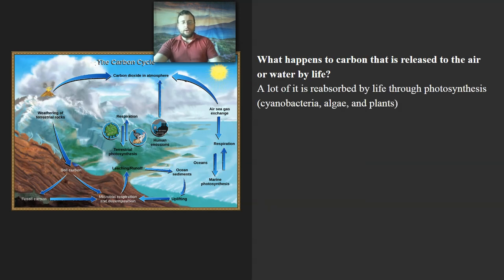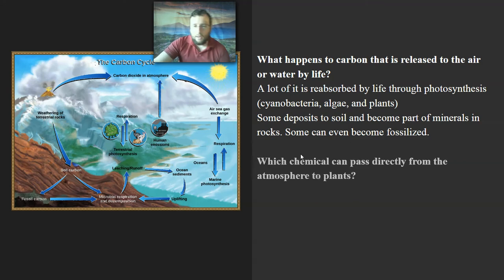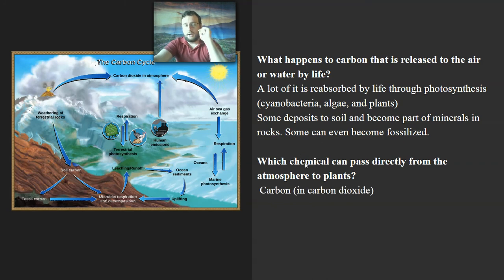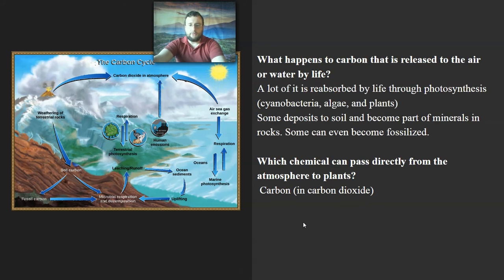Let's talk about the carbon cycle. Life absorbs carbon from the air or water — non-living to living — through photosynthesis by producers: cyanobacteria, algae, and plants. Some of the carbon dioxide released by life returns back to the soil or water and gets trapped into rocks or mineralized. Carbon dioxide is the only chemical that can go straight from the air or water into life forms. Nitrogen and phosphorus require extra steps involving bacteria. That's why the carbon cycle is special — it's faster.